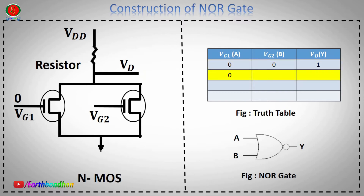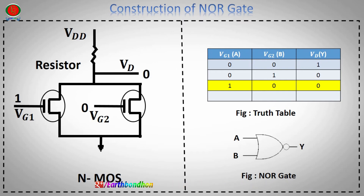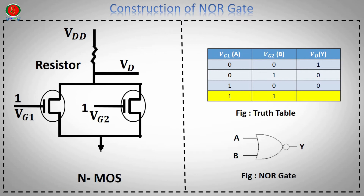NOR gate truth table: input VG1 = A0, input VG2 = A1, output VD = A0. Input VG1 = A1, input VG2 = A0, output VD = A0. Input VG2 = A1, output VD = A0.